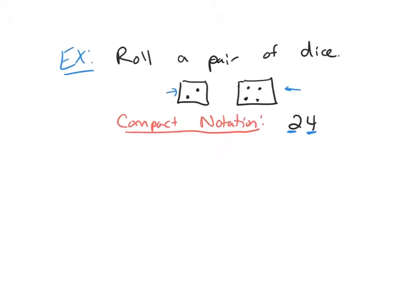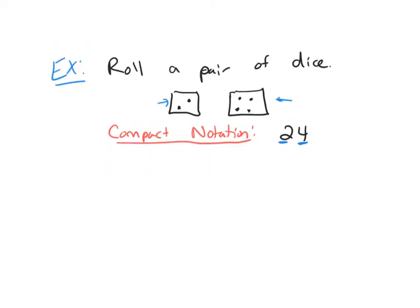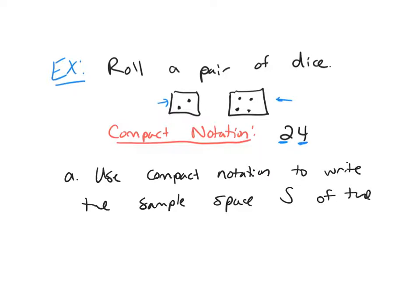We're going to roll a pair of dice. What I want us to do first is use compact notation to write the sample space S of the possible outcomes.